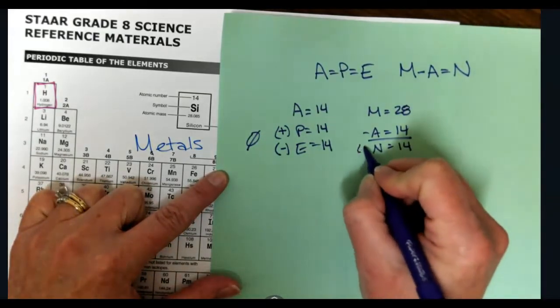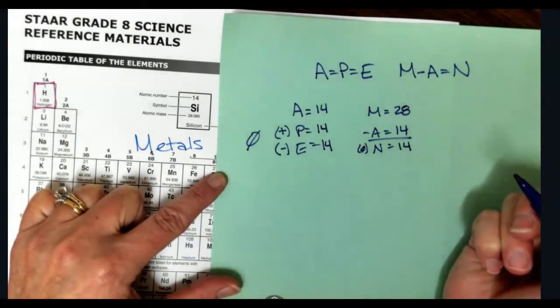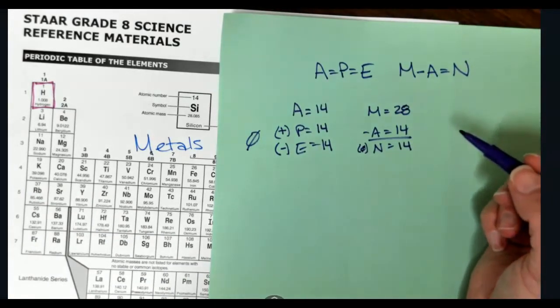Now remember, neutrons have no charge, so they're not going to affect the overall charge of the atom. So if we look at ape man, we're easily able to identify the number of protons, neutrons, and electrons.